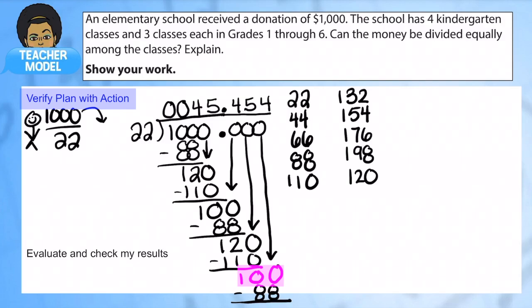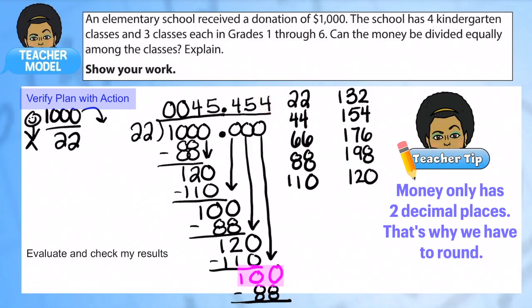So we have 45.454. Now this is where we're going to do our rounding. Remember, we look at that digit in the thousandths place. And we're going to do 0 to 4, we round down. So there's a 4 here. So we're going to round down to 45.45.